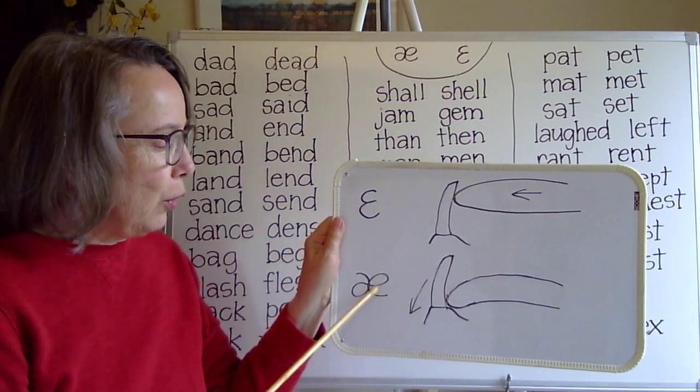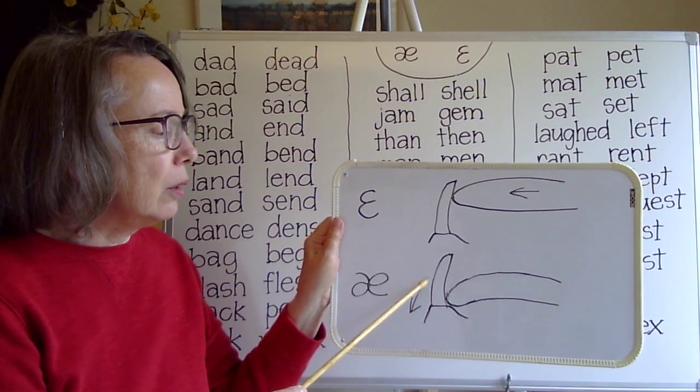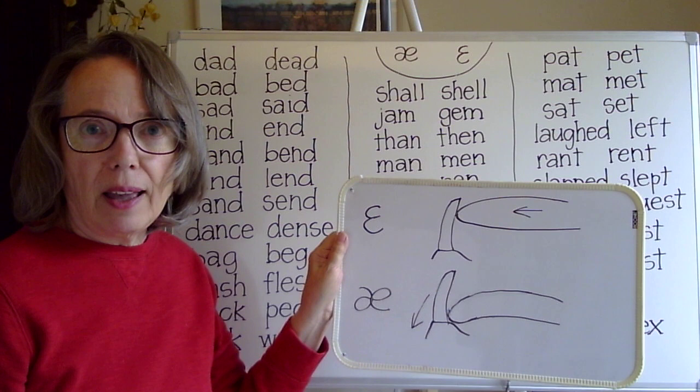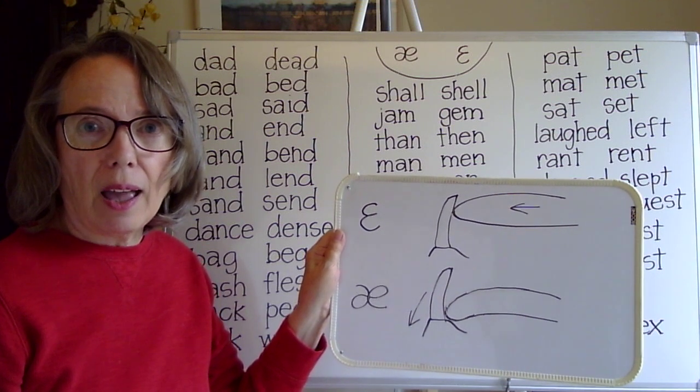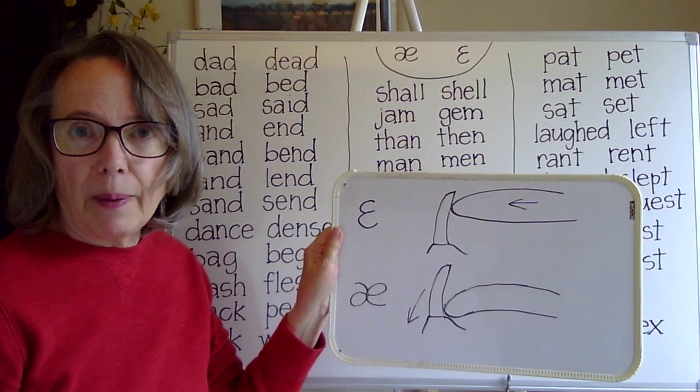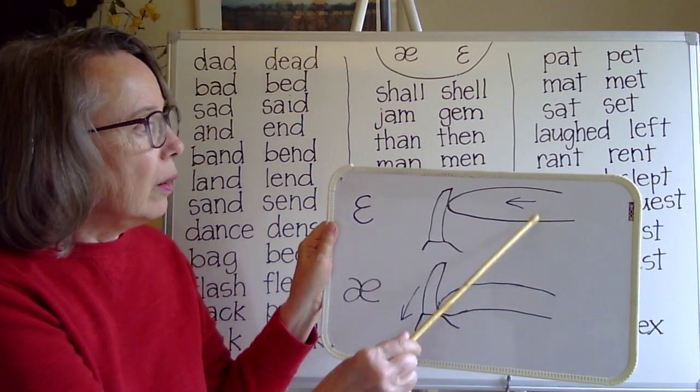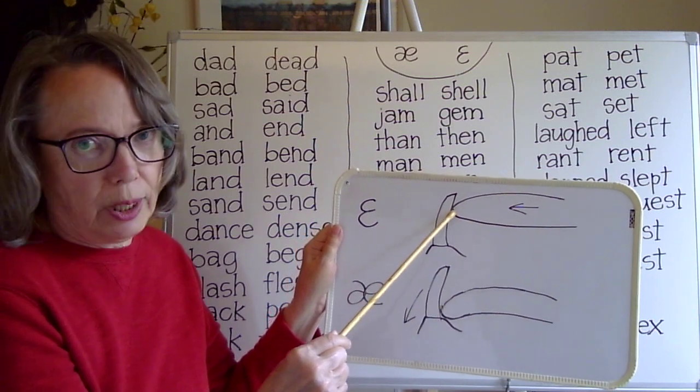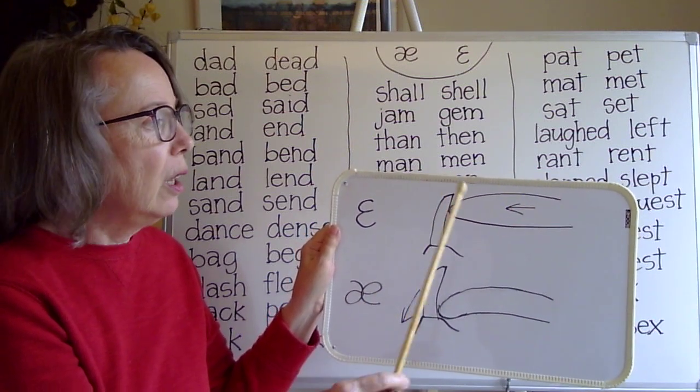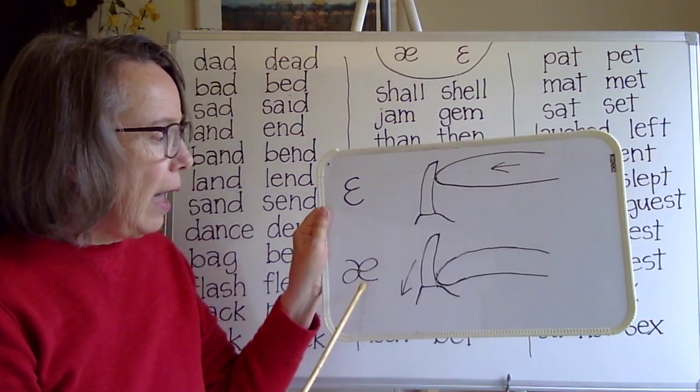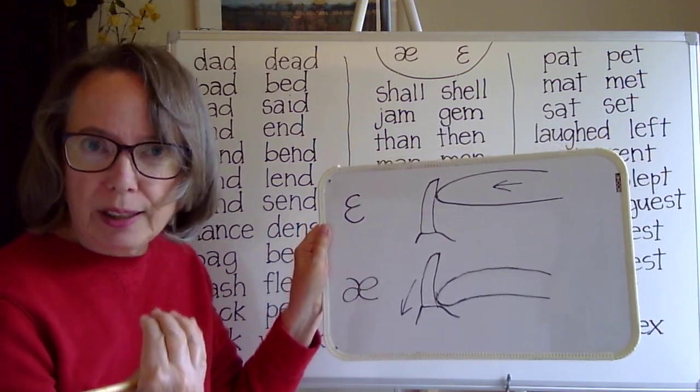Here for ah your jaw is a little lower. When you make ah your tongue is moving more straight forward and you don't feel a push down, where ah you feel a slight pulling down.